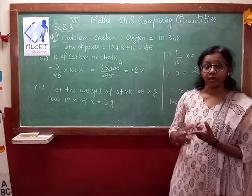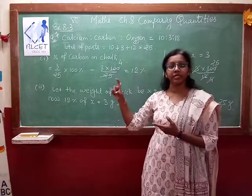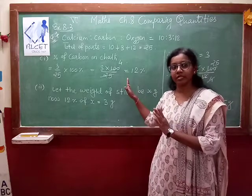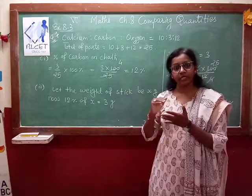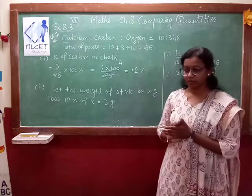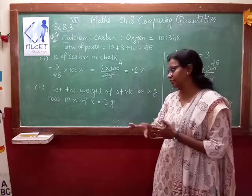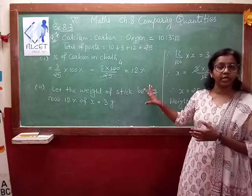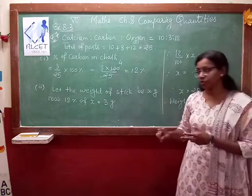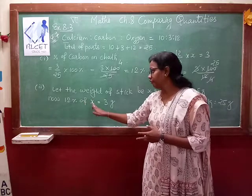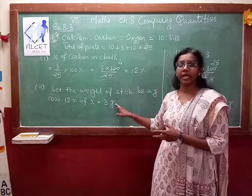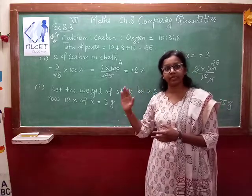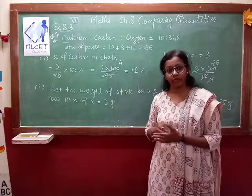Now the second part — you have to find the total weight of the chalk stick. We know the part is 12 percent. We know that 12 percent of the total is 3 grams. That is already given in your question. So let the weight of the stick be equal to x. Total we don't know but the part we know. The weight of carbon in the chopstick is already given, that is 3 grams.